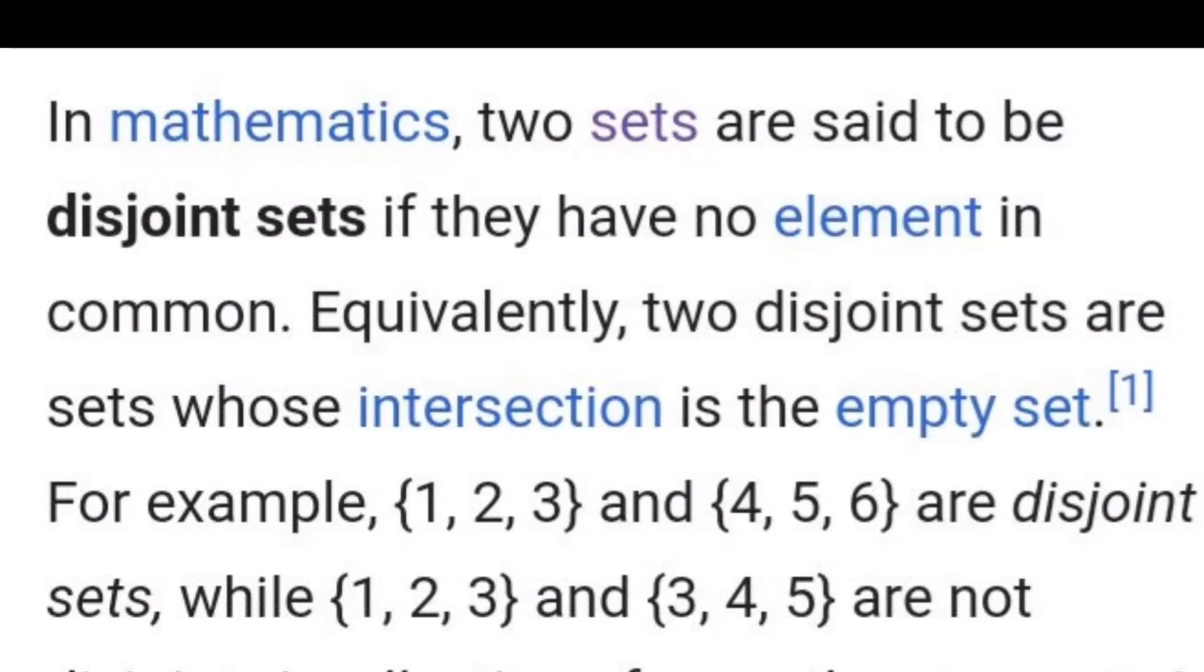For example, {1, 2, 3} and {4, 5, 6} are disjoint sets—they have no common element. In dono sets ke termian koji common nahi hai. While {1, 2, 3} and {3, 4, 5} are not disjoint. Kyun? Kyunke in last ke do sets ka ek element common hai: 3. Isi wajah se they are not disjoint sets.